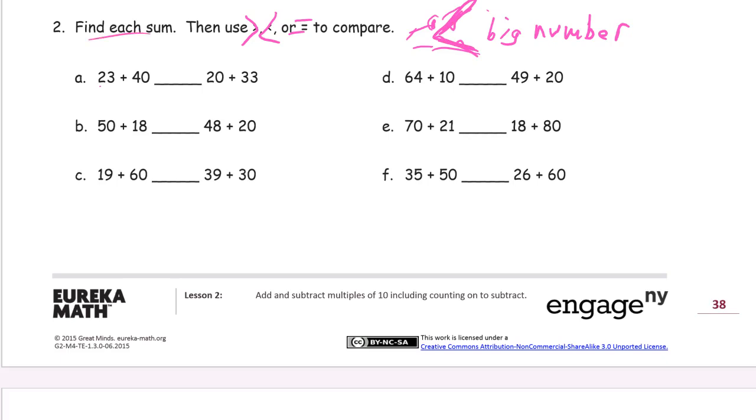But we have to find every sum first. Don't just write in greater than, less than, equal to, as you go. We have to write down what the sums are, and write which symbol works. So, 23 and 40, that's 63. 20 and 33, it's 53, and 63 is greater. 50 and 18, that's 5 tens, so that's 6 tens and 8 ones, 68. 48 and 20, 2 more tens, so that's 68, and those are equal.